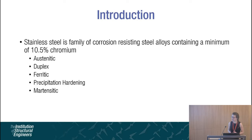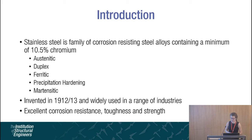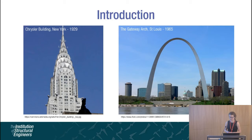Stainless steel is the general name for a family of corrosion-resisting steel alloys. There are five main groups of stainless steel, with austenitic, duplex and ferritic stainless steels being the most commonly used in structural applications. Stainless steel was invented in 1912 and is currently widely used across a range of industries due to its excellent corrosion resistance, toughness and strength. This slide shows two of the earliest structural applications: the cladding of the Chrysler Building in New York in 1929 and the Gateway Arch in St. Louis in 1965.